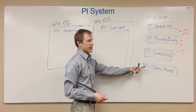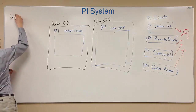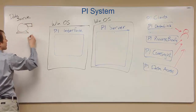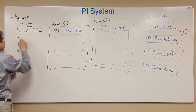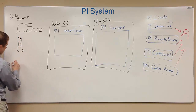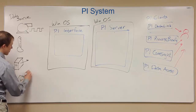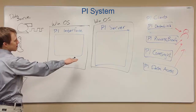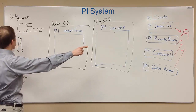We also have to remember where the data is coming from that users want to analyze. That comes from over on the left: data sources. Data sources are anything that generates some kind of process data you want to see — maybe it's a pump that turns on and off every day, or perhaps it's the temperature outside, or information in another database, or manual measurements. These are all data sources. The role of the PI Server and PI Interface in the middle is to get data from the data sources to the PI clients and then to your users.